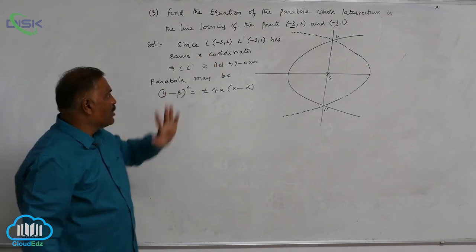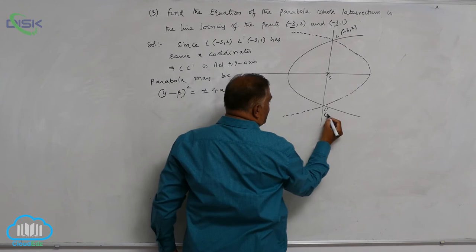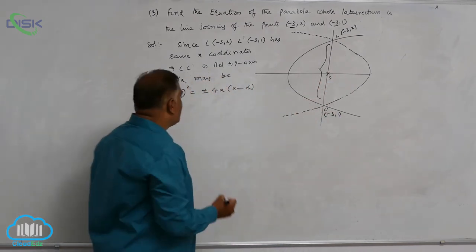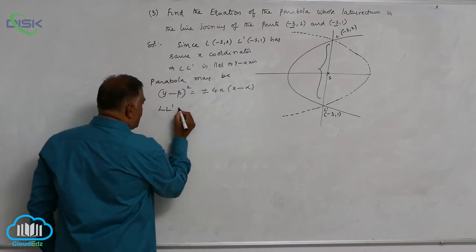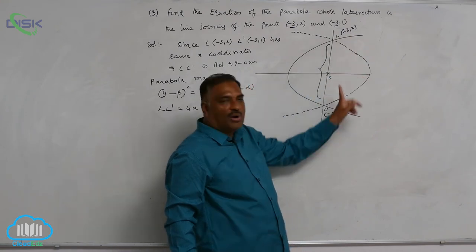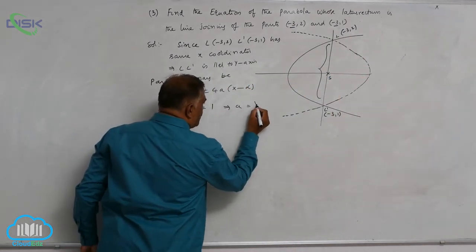Now locate all the points. The first one is (-3, 2), the second is (-3, 1). The distance is given by 4a, so LL' = 4a = distance between the two points = 1, which implies a = 1/4.